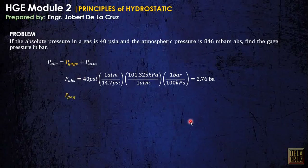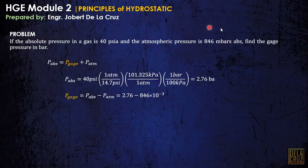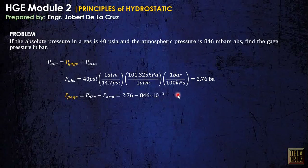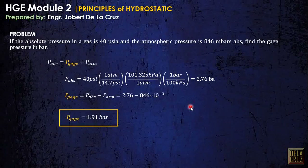Transposing the formula, gauge pressure equals absolute pressure minus atmospheric pressure. Since the atmospheric pressure is given as 846 millibars, we do a direct substitution. The absolute pressure is 2.76 bars minus 846 millibars — divide by 1,000 to convert millibars to bars — and the result is 1.91 bars.